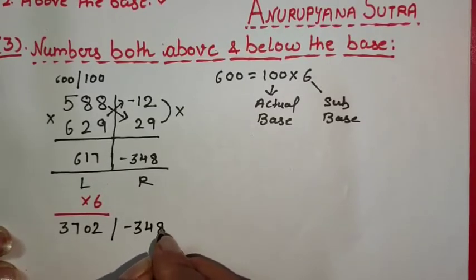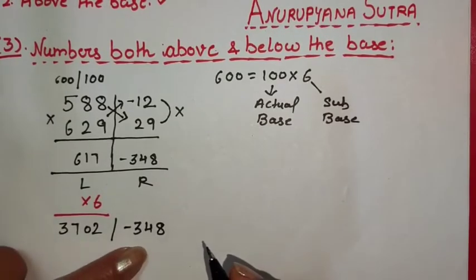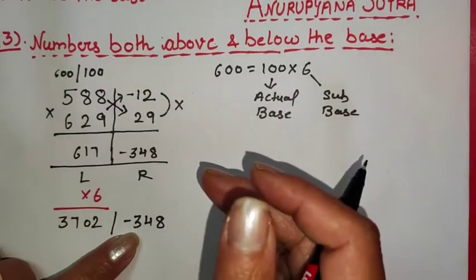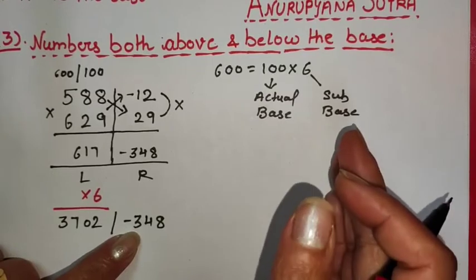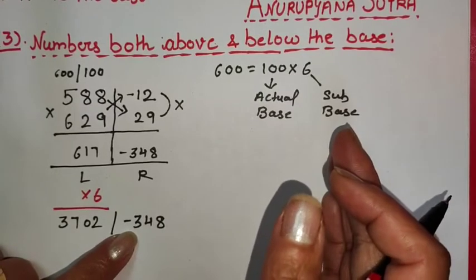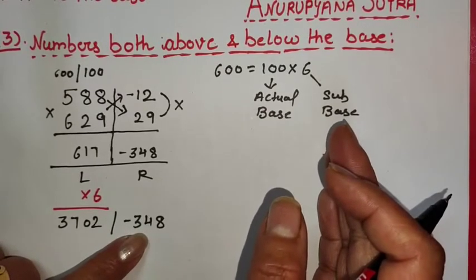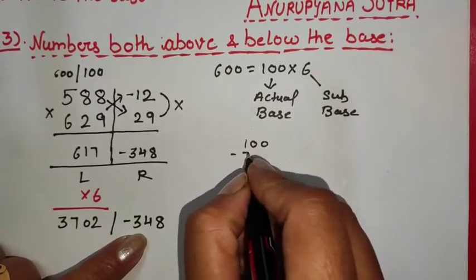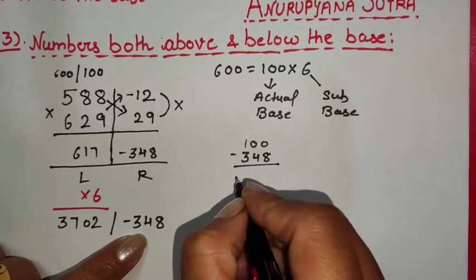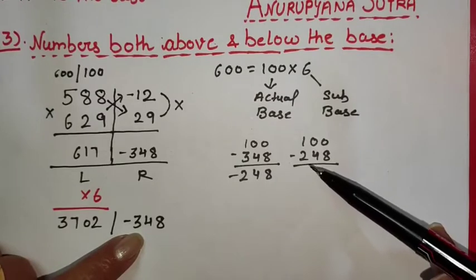Changes have been made to the left-hand side. Now it is the turn of the right-hand side. The right-hand side answer is a negative number, so our next task is to remove this minus sign. We do this by subtracting this number from the base. The base here is 100. But if we subtract 348 from 100 we still get a negative number.